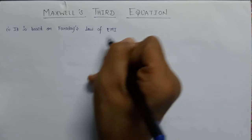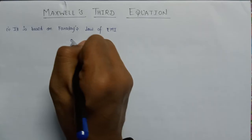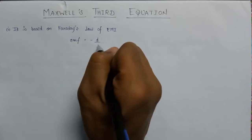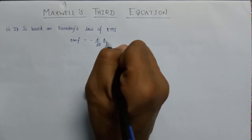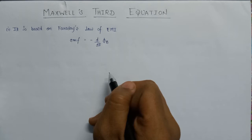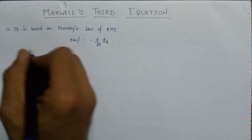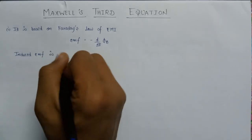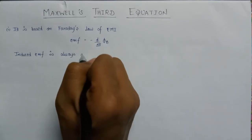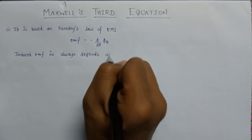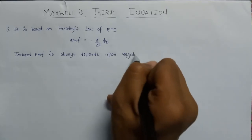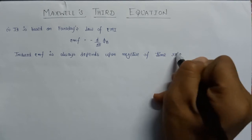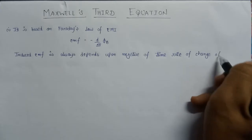According to Faraday's law of electromagnetic induction, the electromotive force that is induced is equal to minus the time rate of change of magnetic flux. The induced EMF always depends upon the negative of the time rate of change of magnetic flux.